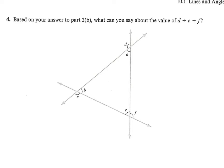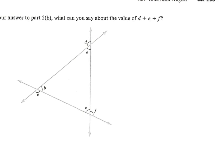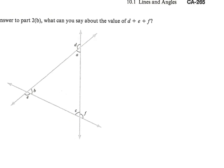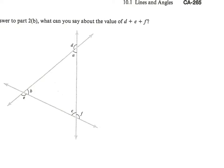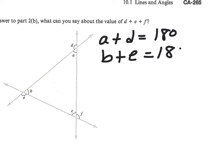Number four asks what we can say about angles d, e, and f symbolically, instead of using the bendy guy. To do that, we're going to write a few equations using supplementary angles — two angles that form a line and add to 180 degrees. So: a plus d equals 180 degrees, b plus e equals 180 degrees, and c plus f equals 180 degrees.